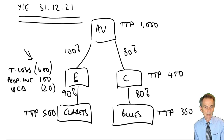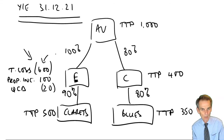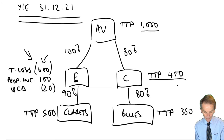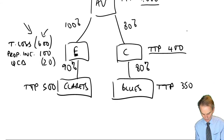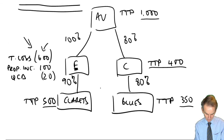I've given you here the TTPs — taxable total profits. AV has £1,000,000. That trading loss is £600,000, property income £100,000, qualifying charitable donations £20,000. AV's TTP is £1,000,000. Company C, the co-subsidiary of Company F, has a TTP of £400,000. The two indirect subs are profit makers: Clarets with a TTP of £500,000 and Blues with a TTP of £350,000.